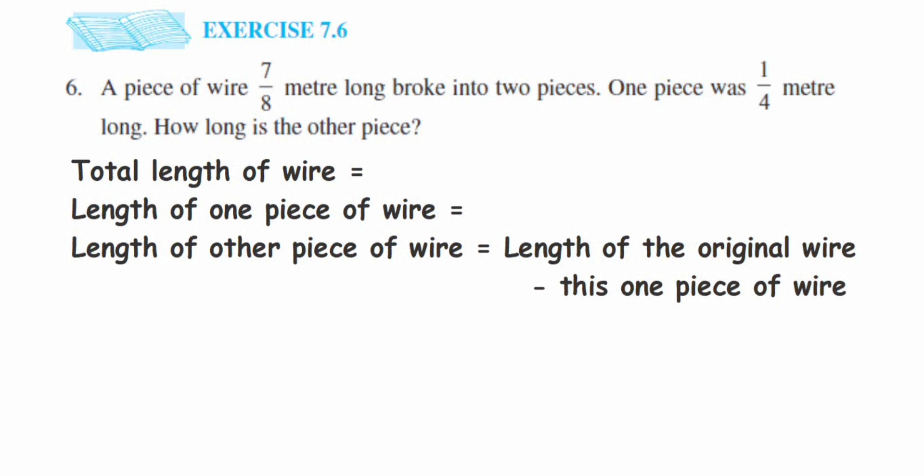Hey everyone, here is a question from Exercise 7.6, question 6. This is from the fraction chapter of Class 10. The question is: A piece of wire 7/8 meter long broke into two pieces. One piece was 1/4 meter long. How long is the other piece? Let's start the solution. I've already written the statements here.